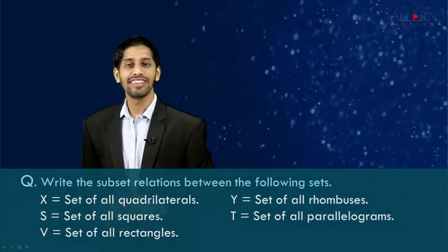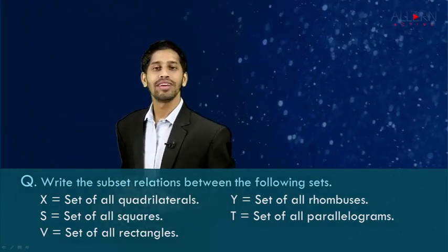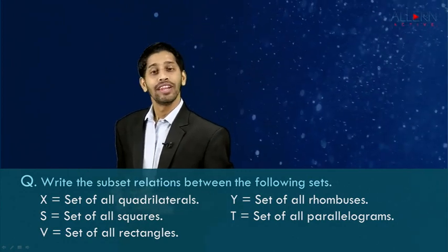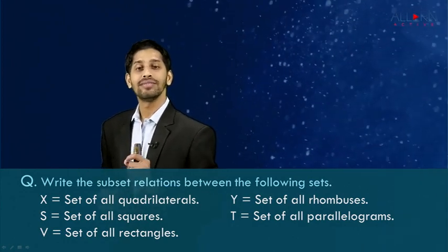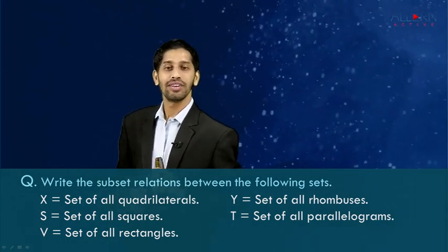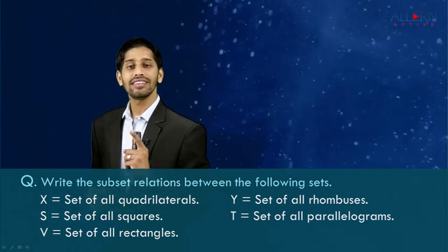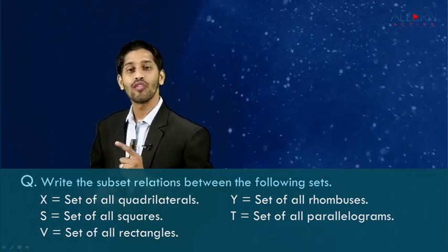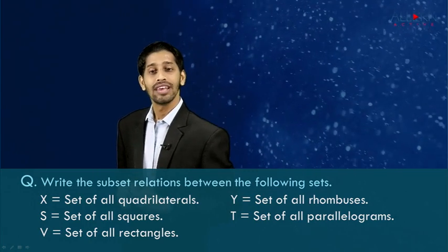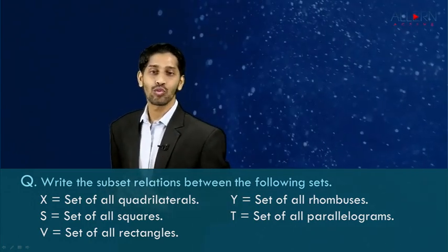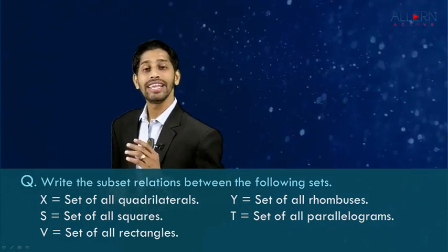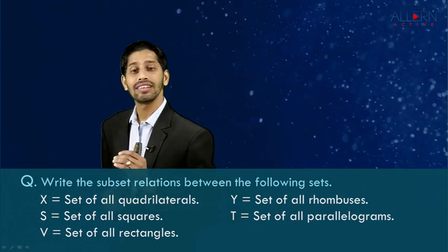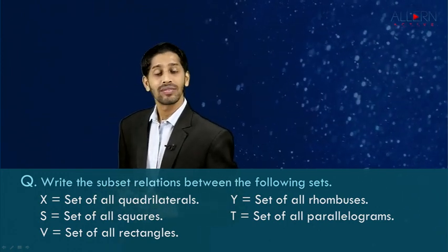Let's take one of the most interesting sums of this chapter based on the concept of subset. The question says: write the subset relation between the following sets. X is a set of all quadrilaterals, Y is a set of all rhombuses, S is a set of all squares, T is a set of all parallelograms, and V is a set of all rectangles.